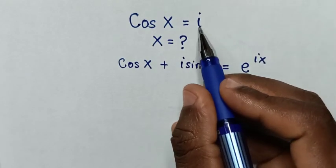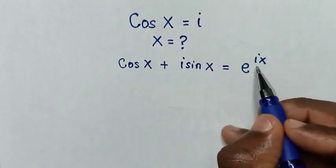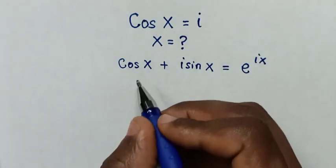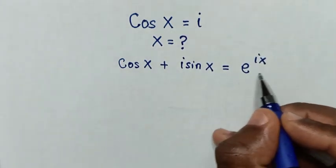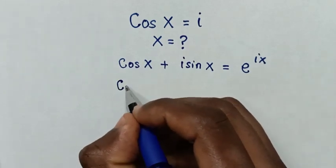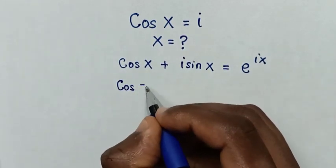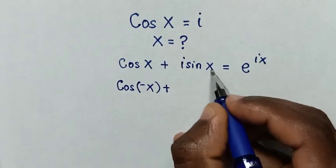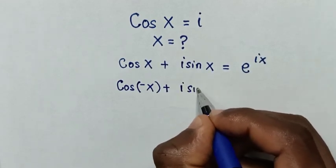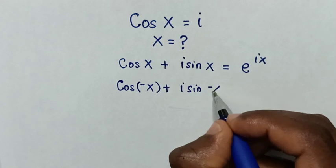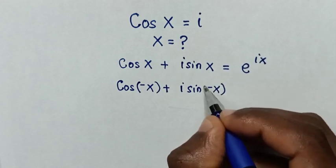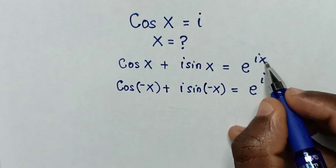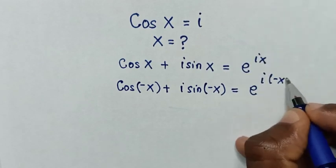Because cos of x is equal to i, and this formula contains i. Then in the next step, in here in the position of x we'll substitute negative x. So it will be cos of negative x, then plus i sine of negative x, is equal to e to the power of i times negative x.